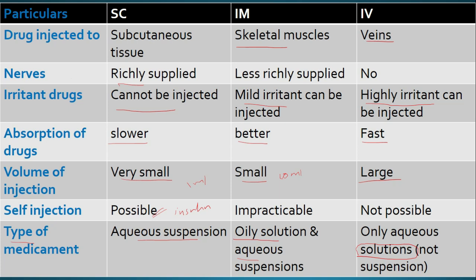To summarize: drug is injected directly into subcutaneous tissue for SC; into skeletal muscle for IM; into vein for IV. Subcutaneous is richly supplied with nerves, so we cannot administer irritant drugs. Absorption of drug is fast in IV. Large volume can be administered in IV. Self-injection is possible in subcutaneous. For type of medicament: aqueous suspension for SC; oily solution and aqueous suspension for IM; aqueous solutions only for IV route.